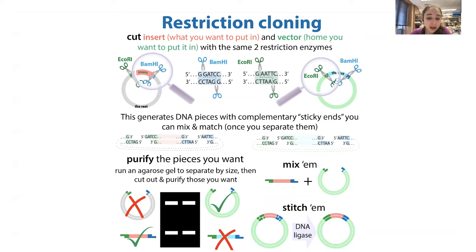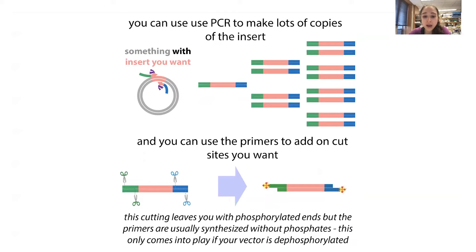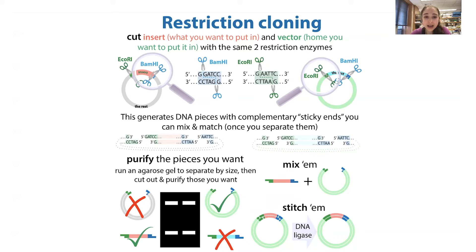One drawback of the restriction cloning method is that you need a lot of both pieces. You're not making copies if you do it just like this. You have to get bacteria to make a lot of copies of these plasmids, purify the whole thing out with a mini prep kit, then cut it up and use the pieces. You need a lot because you're not making copies in the process — you already needed the bacteria to make the copies for you. This will make more sense when we talk about the PCR-based methods.